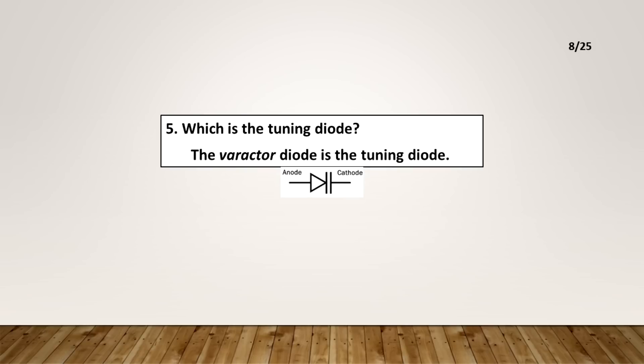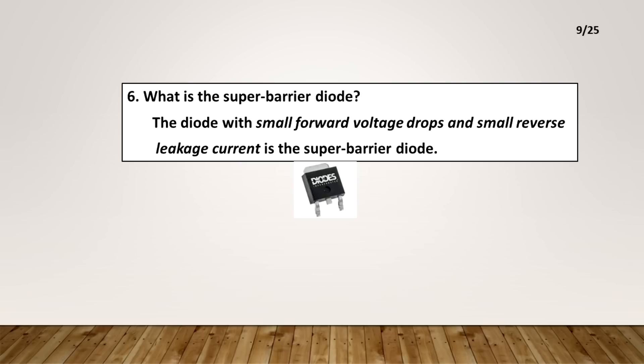Which is the tuning diode? The varactor diode is the tuning diode. What is the super barrier diode? The diode with small forward voltage drops and small reverse leakage current is the super barrier diode.